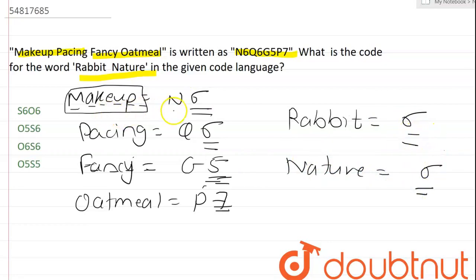Now let's see about N, Q, G, P. In alphabetical order, after M there is N. After P there is Q. After F there is G. After O there is P.